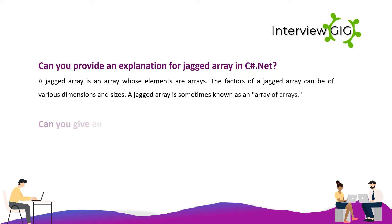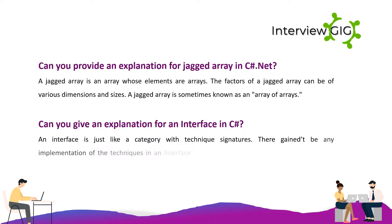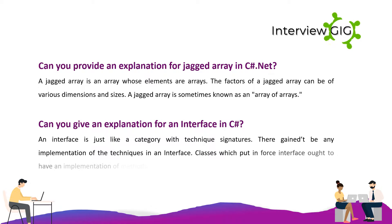What is an interface in C#? An interface is similar to a class with method signatures, but there is no implementation of the methods within an interface. Classes that implement an interface must provide implementations for the methods defined in that interface.